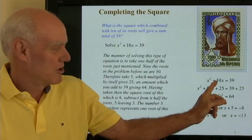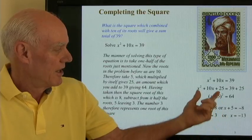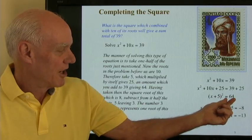Take half the coefficient of 10, which is 5, square it, which is 25, add it to both sides. This becomes the perfect square x plus 5 squared. The right side is 64.